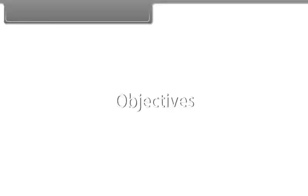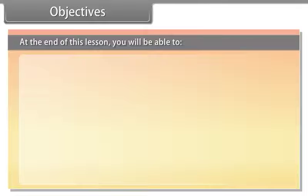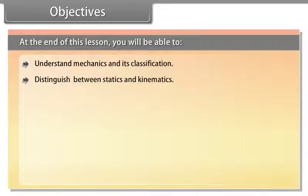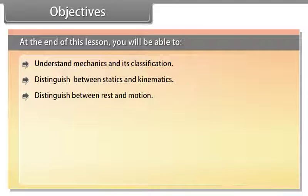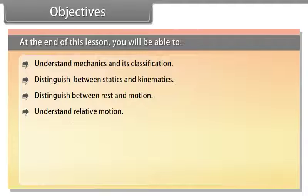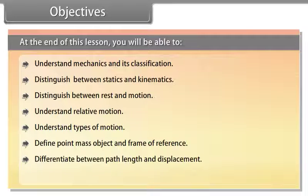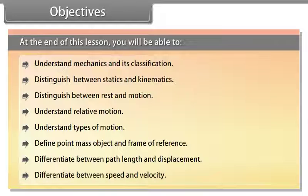Objectives: At the end of this lesson you'll be able to understand mechanics and its classification, distinguish between statics and kinematics, distinguish between rest and motion, understand relative motion, understand types of motion, define point mass object and frame of reference, and differentiate between path length and displacement, and the difference between speed and velocity.